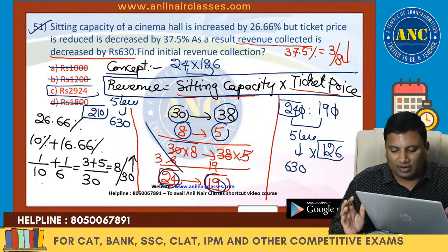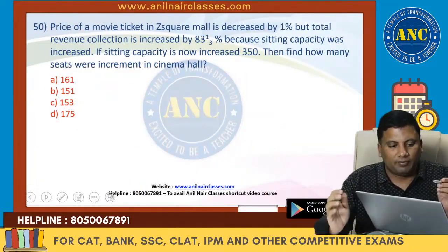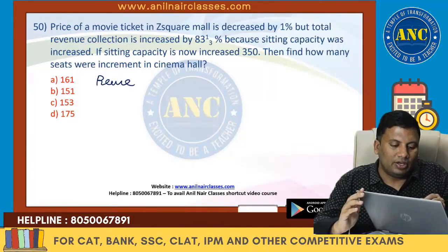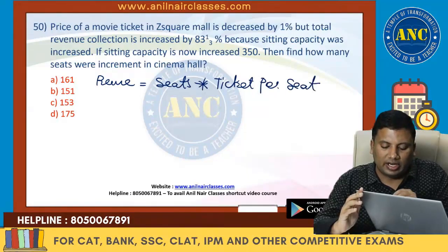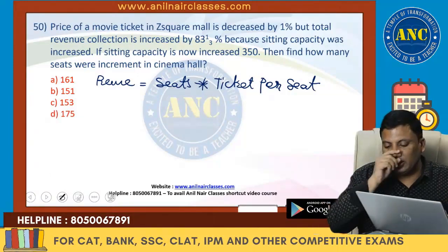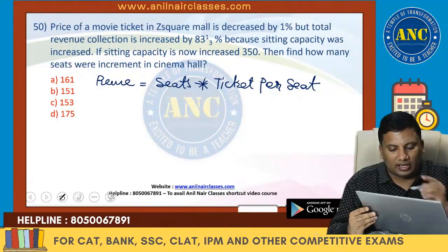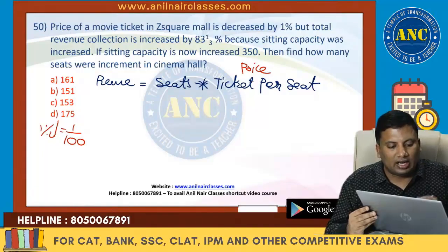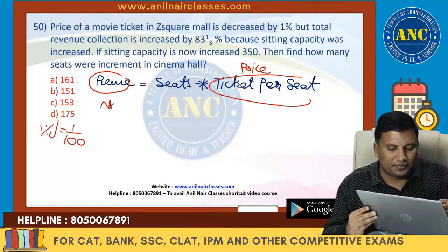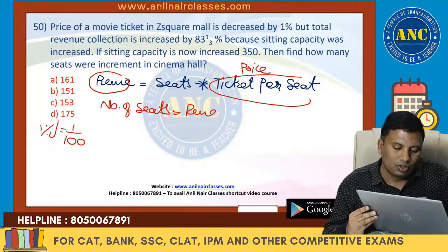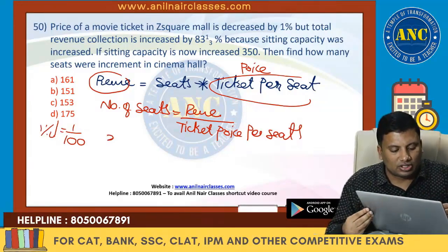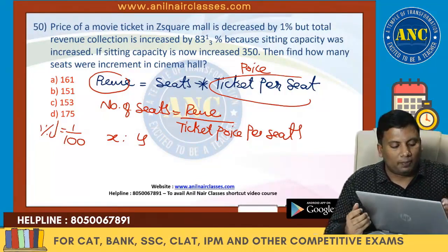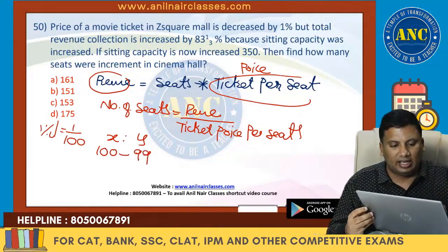Revenue is nothing but number of seats into ticket price per seat. Going statement by statement, you will get the answer. Revenue is seats × ticket price per seat. Price is decreased by 1% — 1 out of 100 — so ticket price per seat drops. Total revenue is given. Number of seats = revenue divided by ticket price per seat. Let seats be x and y. Initial and final ticket price: 1% drop means it becomes 99.